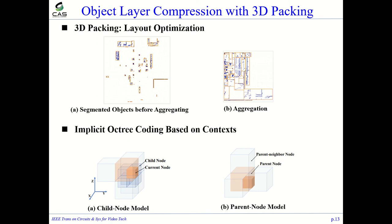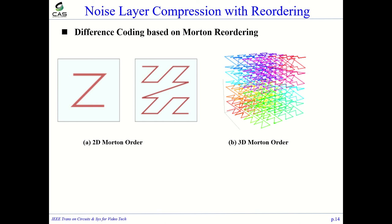This is defined as a bin-packing optimization problem in the literature. Finally, the packed object layer is entropy-coded based on child-level and parent-level contexts. The points of the noise layer are encoded with differential coding, where each point is predicted according to the nearest neighbor by alternating XYZ coordinates.